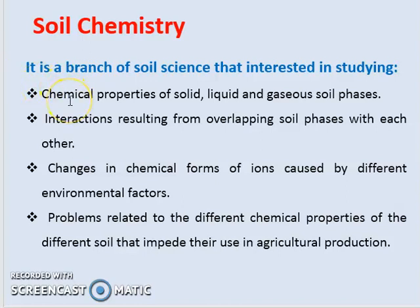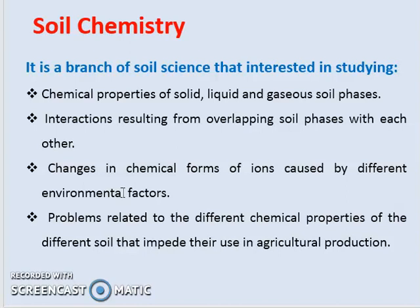Soil chemistry is defined as a branch of soil science that is interested in studying the chemical properties of soil liquid and gaseous soil phases, and the interactions resulting from overlapping soil phases with each other. It also covers chemical changes in the environment caused by different environmental factors, and problems related to different chemical properties of soils that impede their use in agriculture, like salinity, sodicity, toxic iron, and so on.